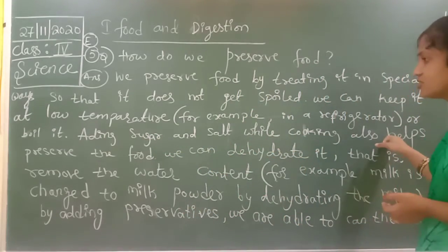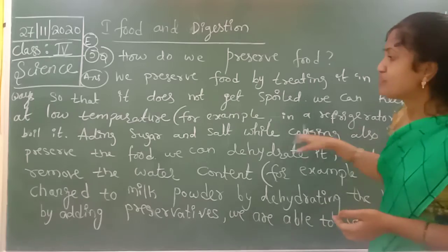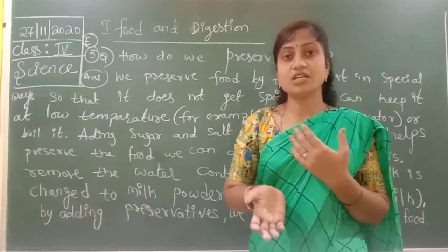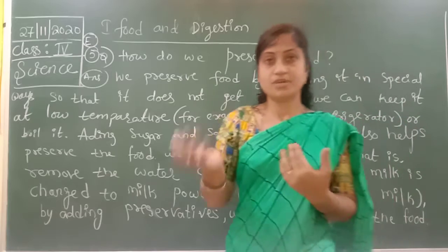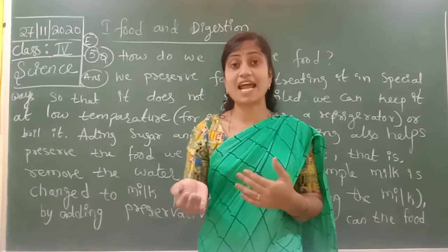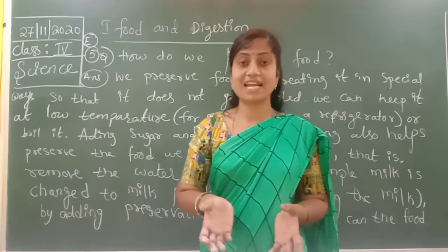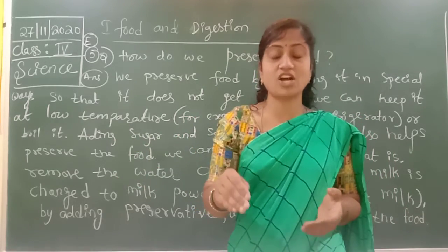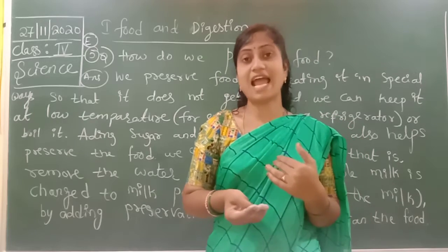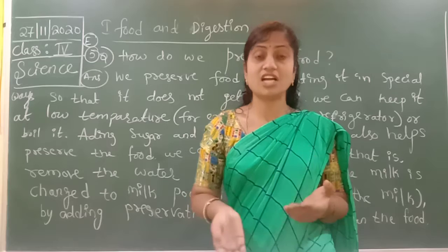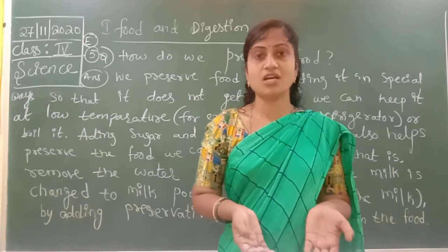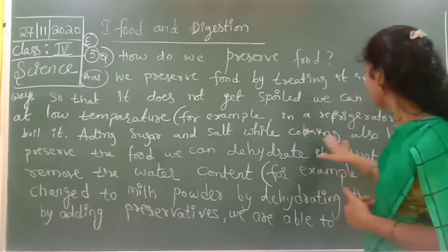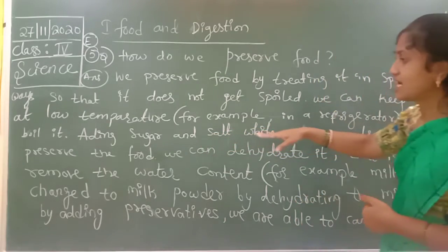Adding sugar and salt while cooking also helps preserve the food. When you are cooking sweet food, adding sugar means it's not spoiled. When adding salt properly to curry, the curry also doesn't spoil — it stays good from morning to night. If you add less salt, it may spoil by afternoon or night. So sugar and salt also help preserve the food.